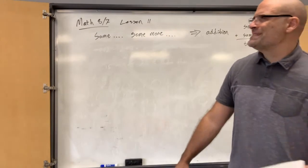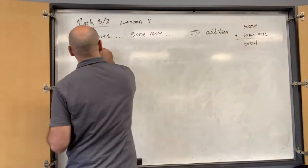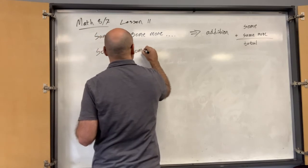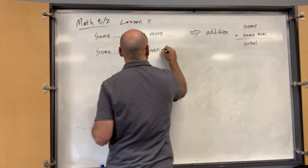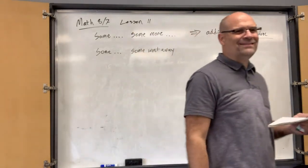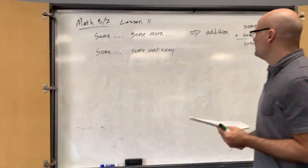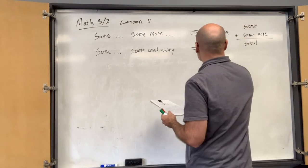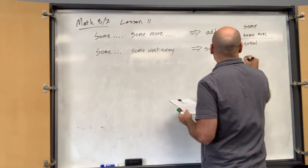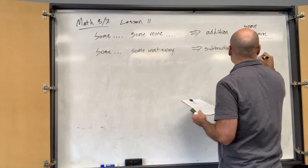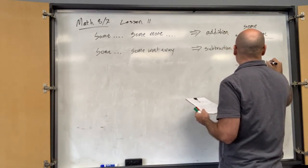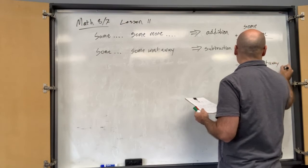So what kind of problem is this? What if you have some and then some went away? What kind of problem is that? Grady? Subtraction. Subtraction. Okay. So that could be something like this. Some minus however many went away, and then what you have left.